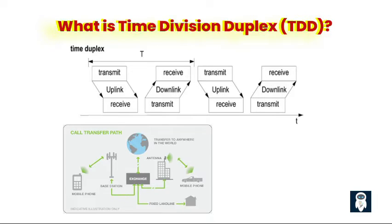During a specific time slot, the communication direction is switched between the transmitter and the receiver. For example, during one time slot, the transmitter sends data while the receiver remains idle, and during the next time slot, the receiver listens for incoming data while the transmitter remains idle. The duration of each time slot can be fixed or variable, depending on the system's design and requirements. The allocation of time slots can be dynamically controlled based on the communication needs and traffic conditions.